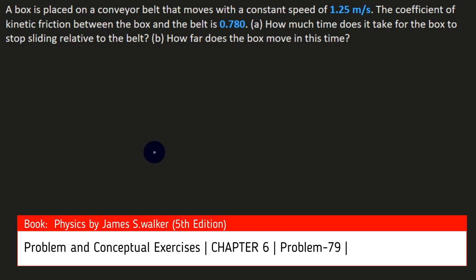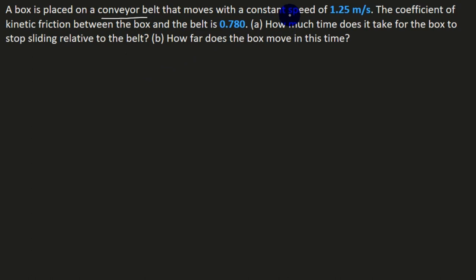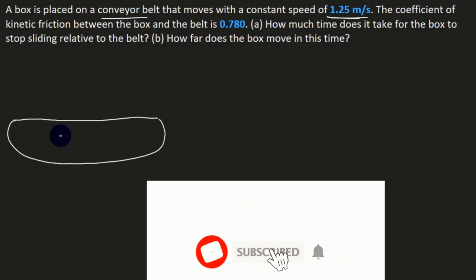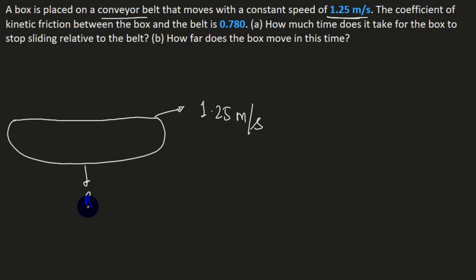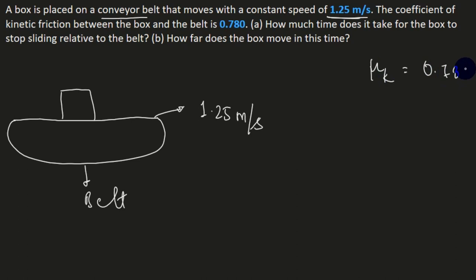Next question: a box is placed on a conveyor belt that moves at a constant speed of 1.25 m/s. The coefficient of kinetic friction between the box and belt is μ_k = 0.780. There are two parts to solve.